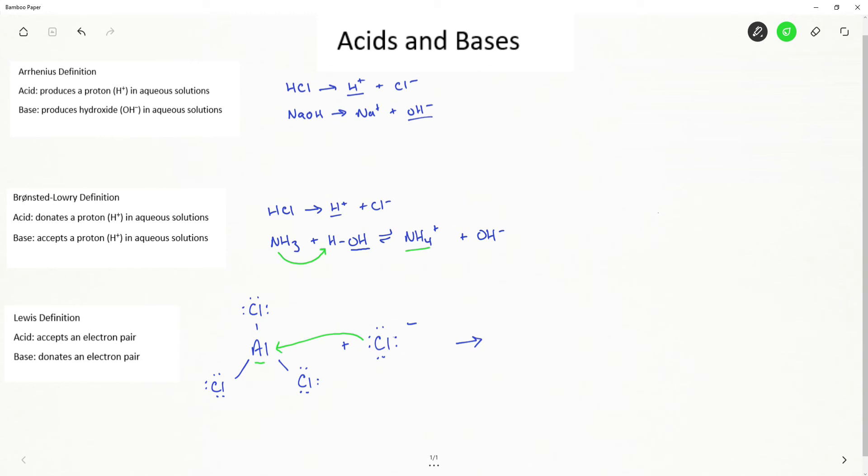Chloride donates that electron pair. Therefore the aluminum trichloride acts as the acid and the chloride anion acts as a Lewis base. And here is the Lewis structure for our product.